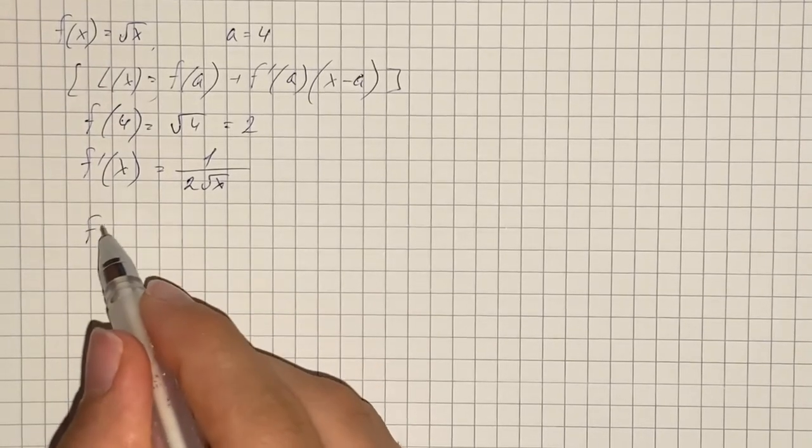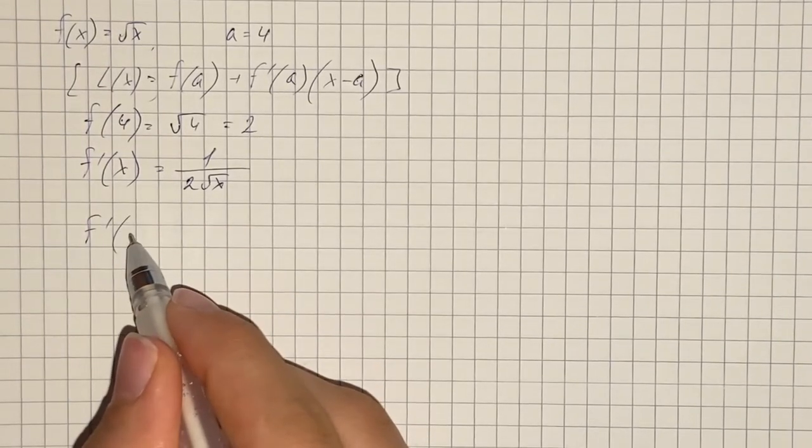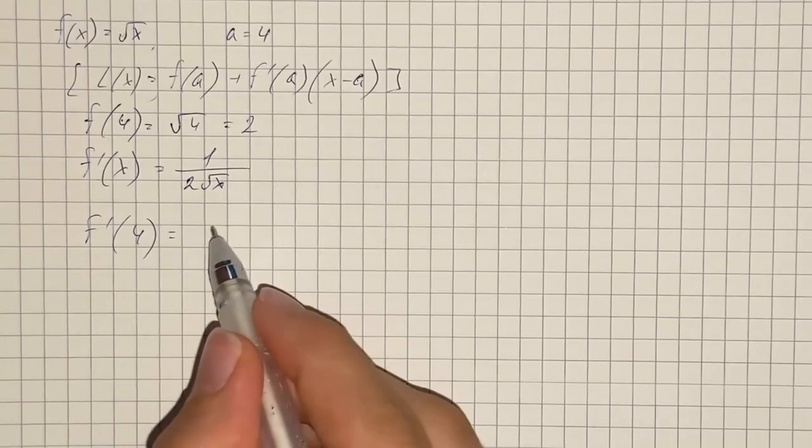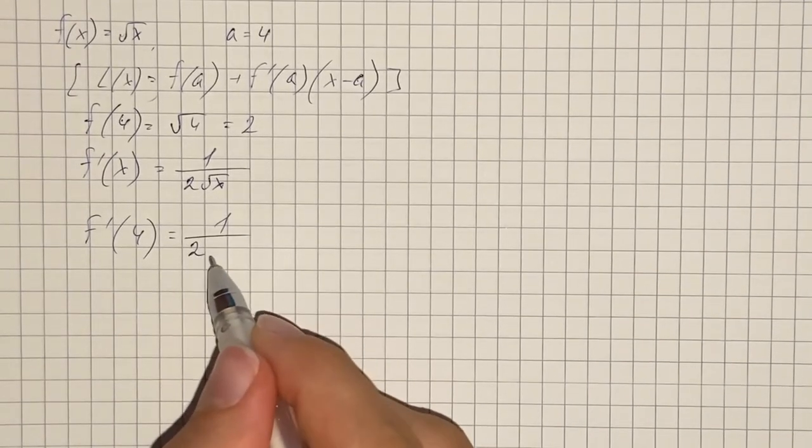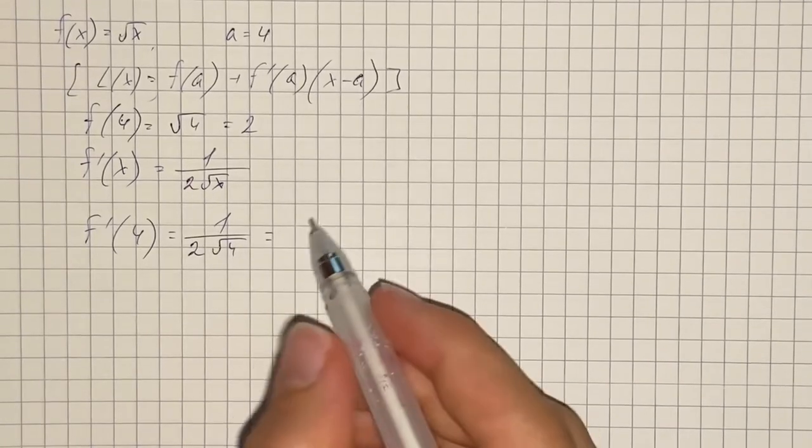So now we can find derivative evaluated at point 4, so substitute instead of x 4 and get 1 over 2 square root of 4 and that's going to be 1 fourth.